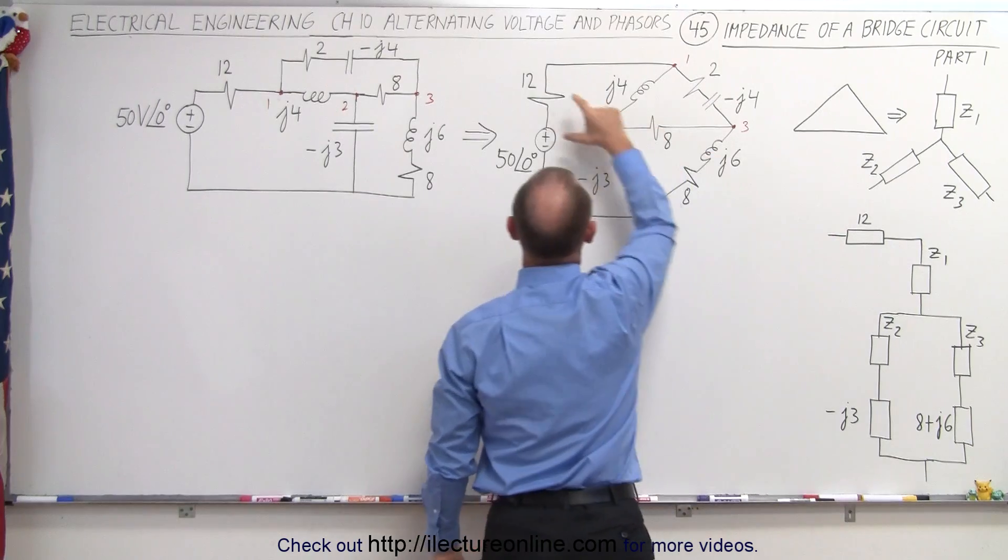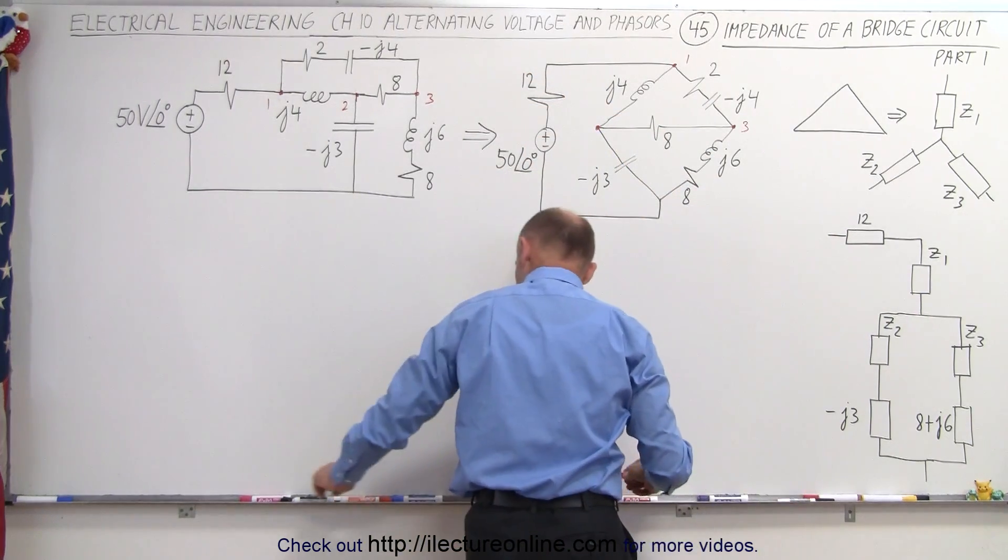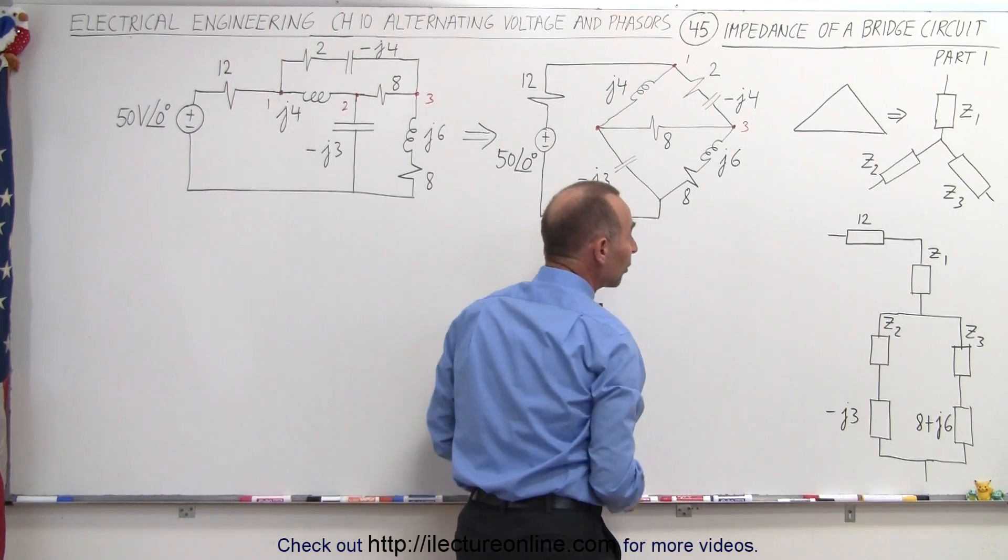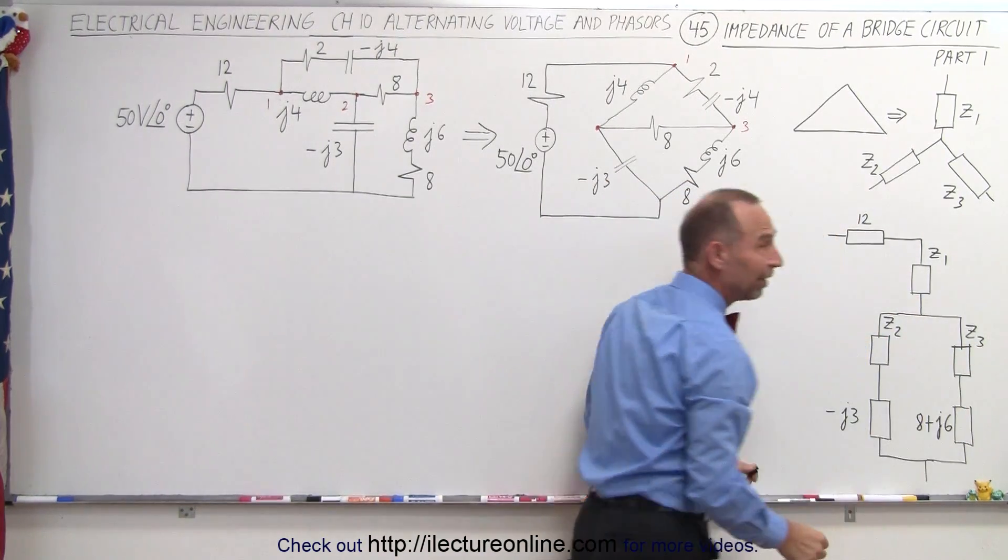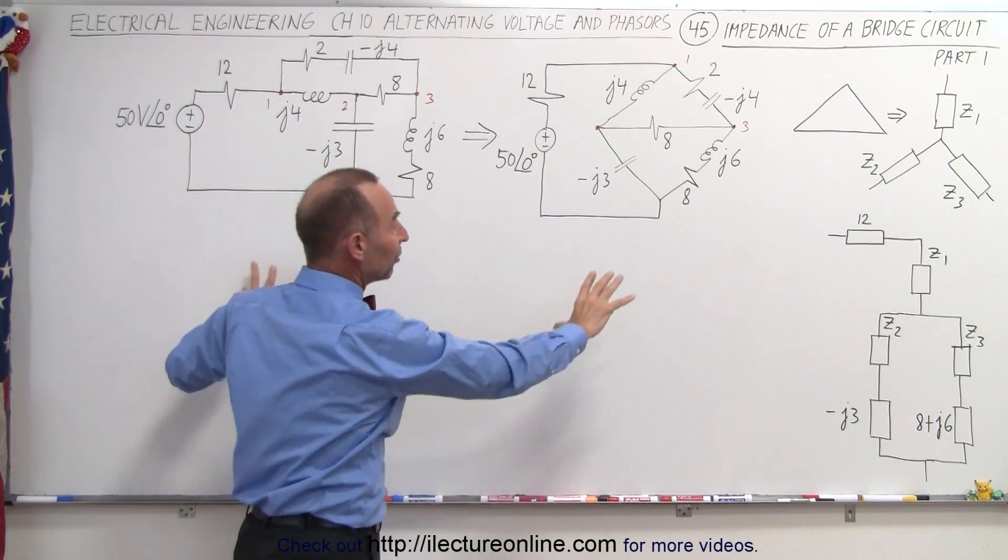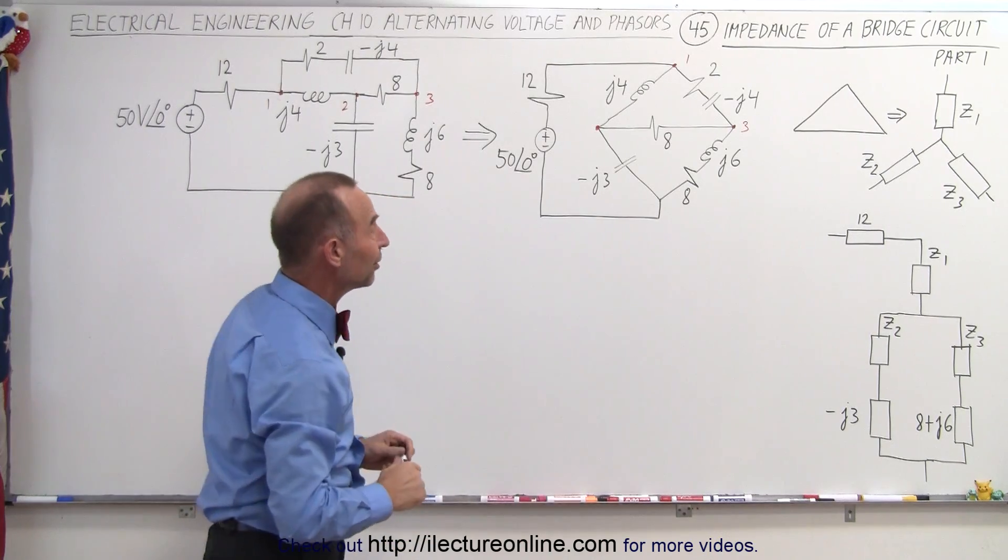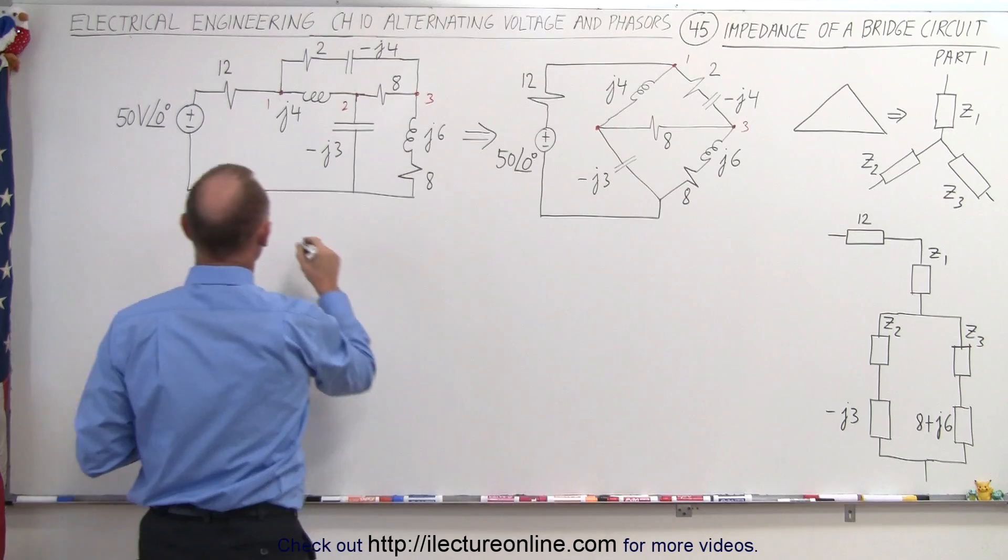We're keeping our 12 ohm resistor right here. Of course, that only has the real part. We don't have an imaginary part there. And let's now go ahead and try to find out what Z1, Z2, and Z3 is. At that point, we'll stop on this video, then we'll continue on the next video and we'll finish the problem. Hopefully we can do it in two videos because we only have so much board space. So how do you find Z1?